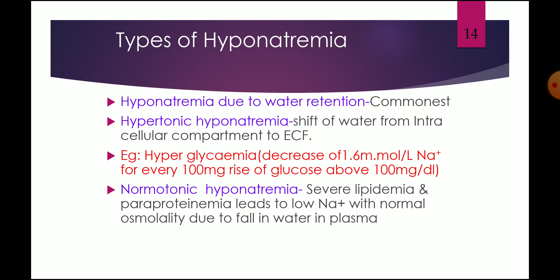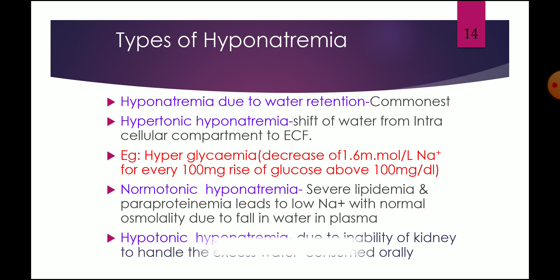Normotonic hyponatremia — severe lipidemia and paraproteinemia can lead to low sodium with normal osmolality due to the fall in the water fraction of plasma. That is the condition where normotonic hyponatremia occurs: hyperlipidemia and paraproteinemia. Then hypotonic hyponatremia means the inability of the kidney to handle the excess water consumed. If we are drinking a lot of water and the kidney is a little weak and cannot excrete the amount, dilutional hyponatremia — that is hypotonic hyponatremia — also occurs.